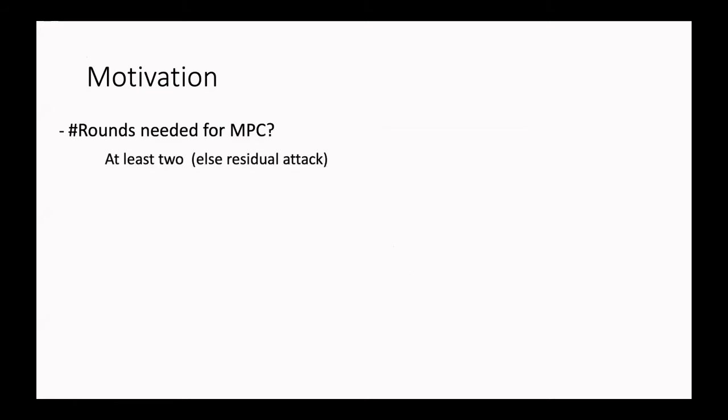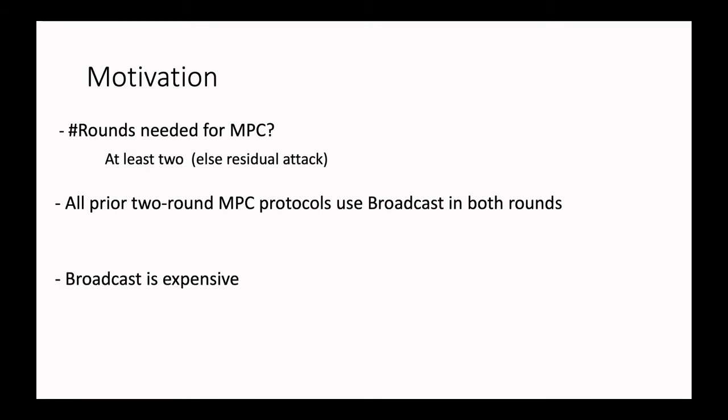Let's start with some motivation. How many rounds do we need to compute an MPC protocol? The answer is at least two, because in one round we can always launch a residual attack. Usually in the literature these two rounds are considered as two rounds of broadcast, but broadcast is expensive. So a natural question is: can we reduce the amount of broadcast needed in these two rounds? This question was already asked by Conant and Toll, who gave some answers in the case of a dishonest majority. In our case, instead, we consider the honest majority setting, where the adversary can corrupt at most N/2 minus one of the parties.